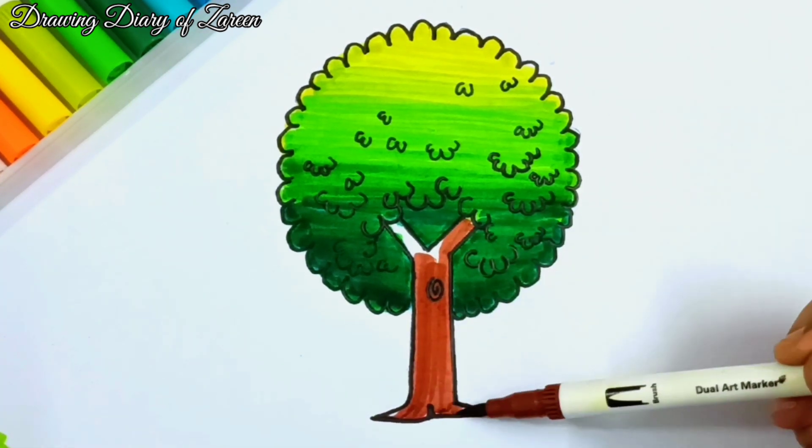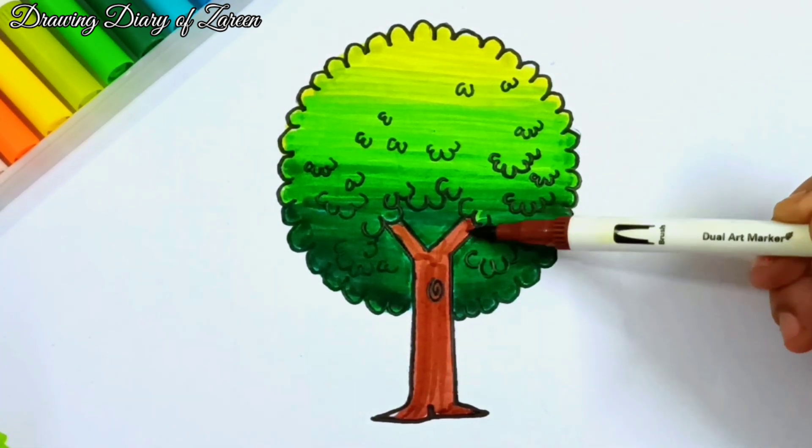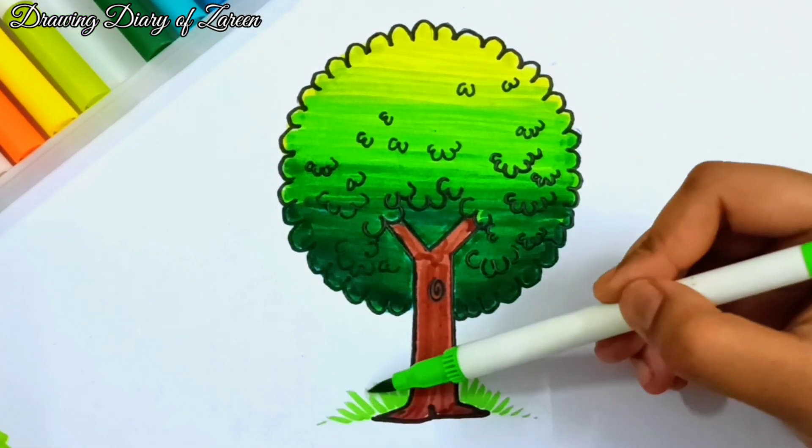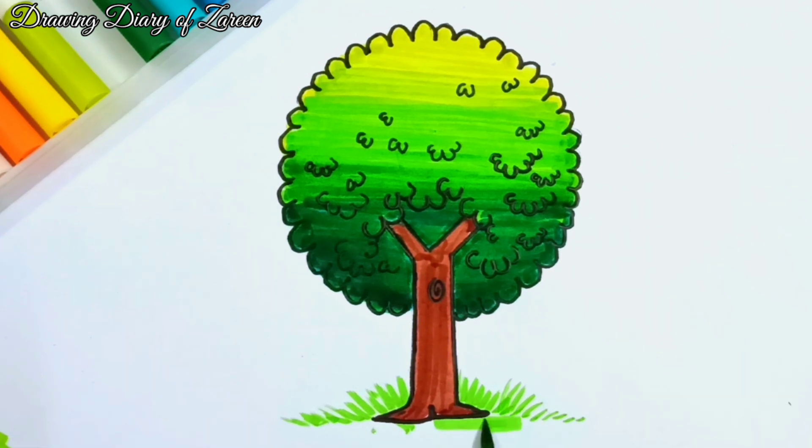Now we will add brown color at the wooden part of the tree and some grass around the root of the tree.